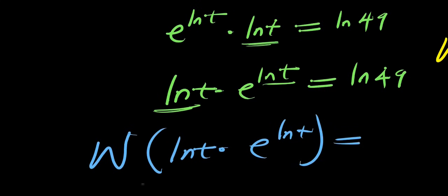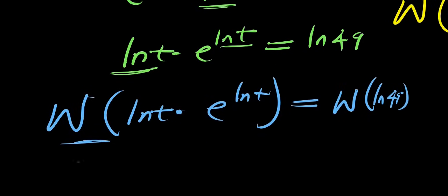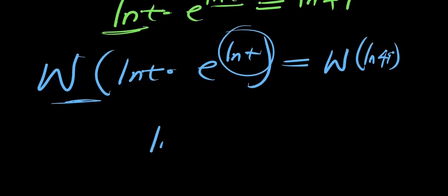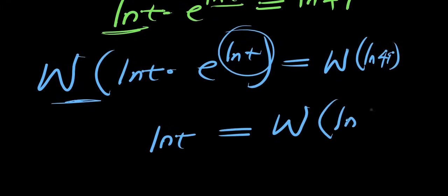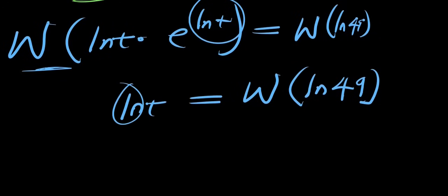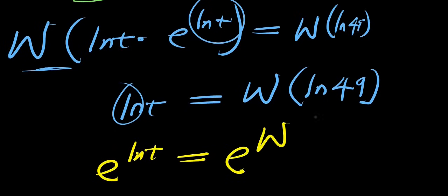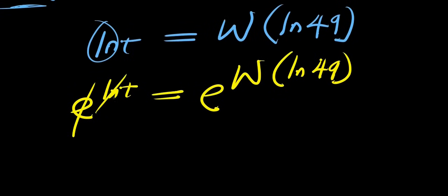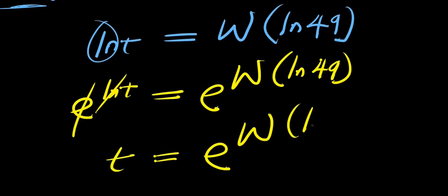Applying the Lambert W function to both sides: W(ln(t)·e^(ln(t))) = W(ln(49)), which gives ln(t) = W(ln(49)). To isolate t, we introduce e on both sides: e^(ln(t)) = e^(W(ln(49))). Since e and ln cancel, we get t = e^(W(ln(49))).